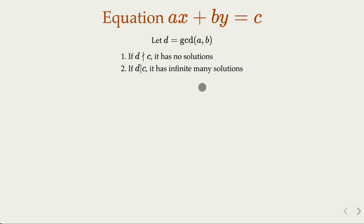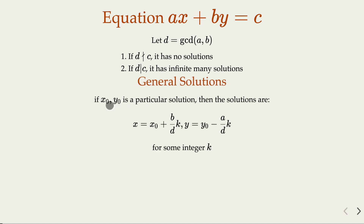But how do we find the solutions? Usually we start from the Euclidean algorithm to find a particular solution. For the general solution, we start with a particular x₀, y₀, and then in general we have infinitely many solutions where k is any integer.